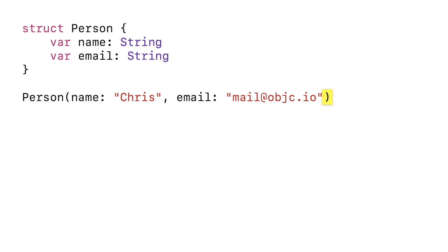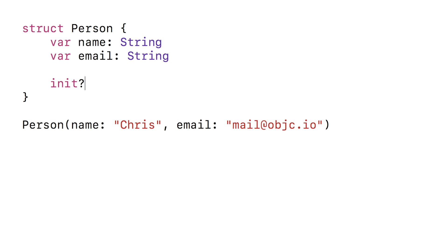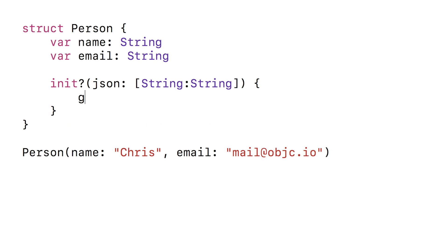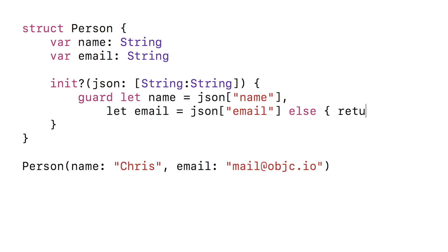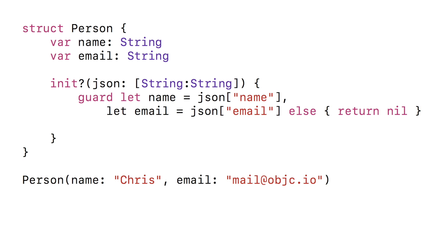We can also add a custom initializer to parse JSON. This is a failable initializer and it takes a JSON dictionary. It tries to read out the name and the email from the dictionary, and if one of the two is missing, it will just return nil. Now we have both the name and the email and we can assign them.